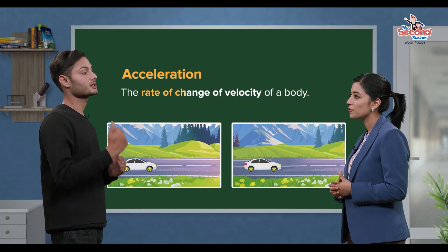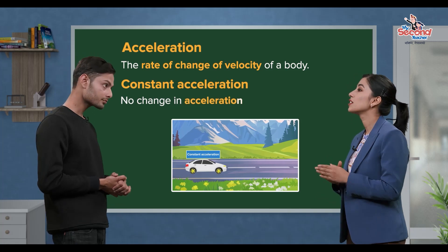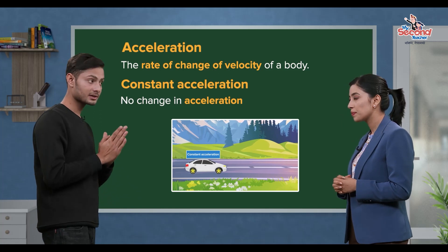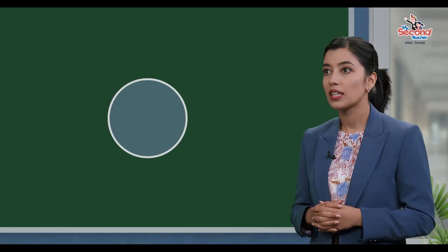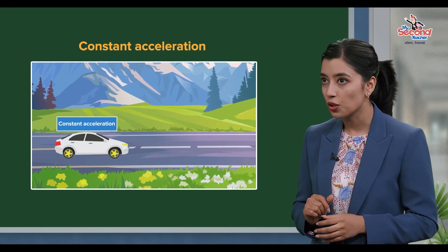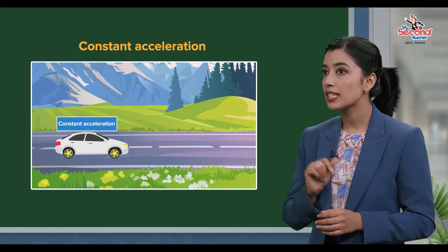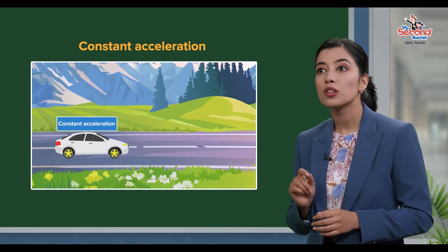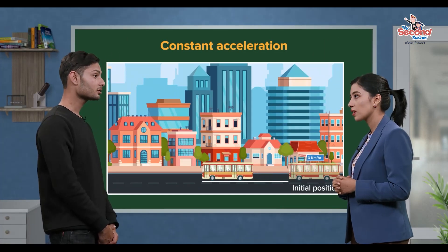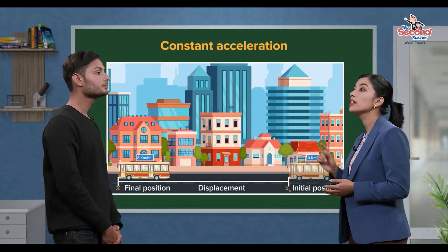Acceleration is the rate of change of velocity. If you have constant acceleration, it will have the same value throughout — that is what constant acceleration means. Constant acceleration applies to objects moving in a straight line.